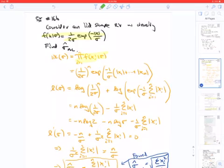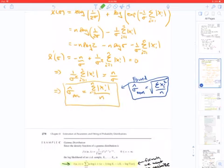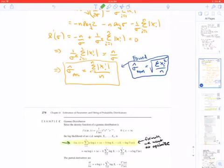Another example here, again single parameter. So we find the log likelihood, set the derivative equal to zero, and now we find that we get a MLE estimate that's different than the mom estimate.